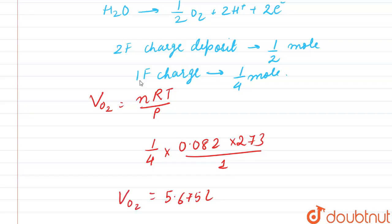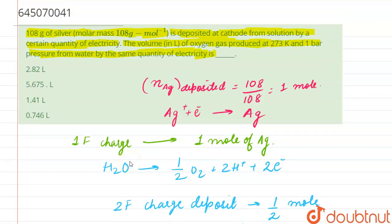So V of O2 is 5.675, this is our answer which is basically option number B.